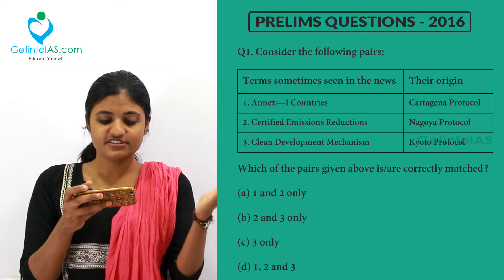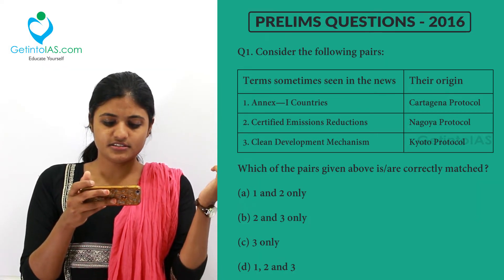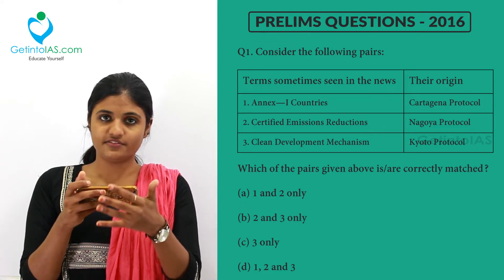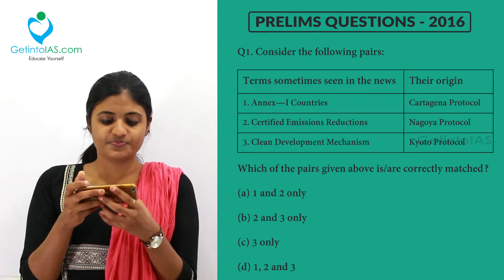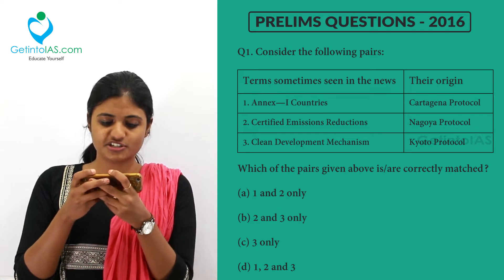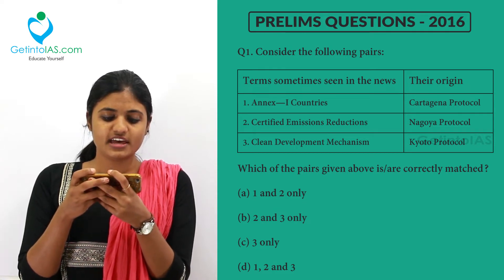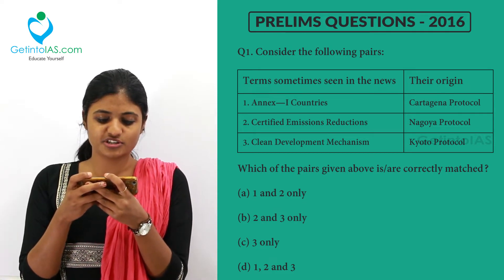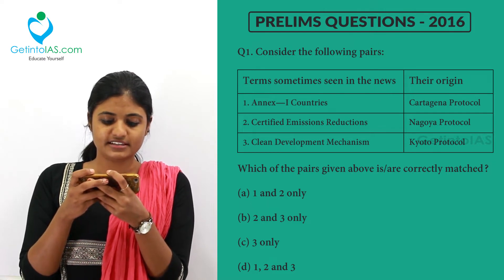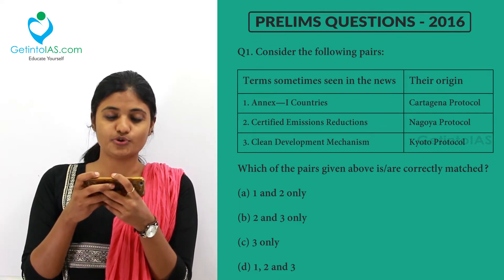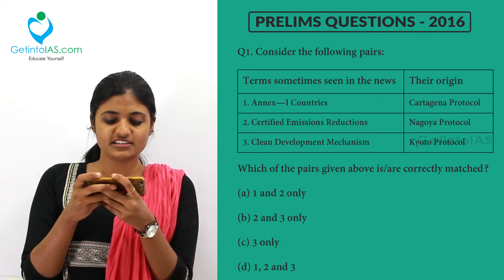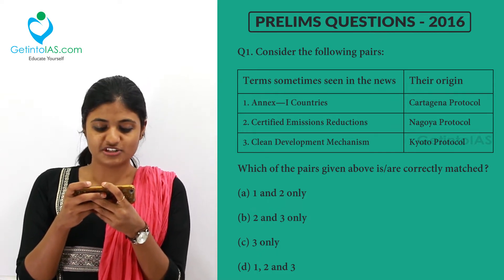Towards the left side they have given the term sometimes seen in news and towards the right side they have given their origin. The first one is Annex 1 countries, Cartagena Protocol, Certified Emissions Reduction, Nagoya Protocol, Clean Development Mechanism (CDM), and Kyoto Protocol. Which one of the pairs given above is correctly matched?